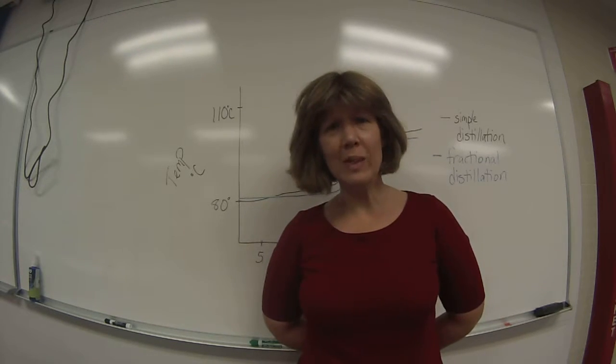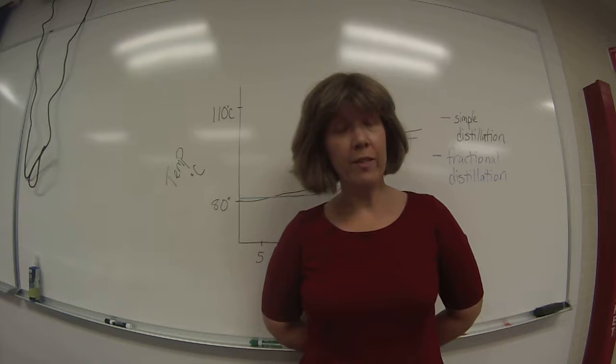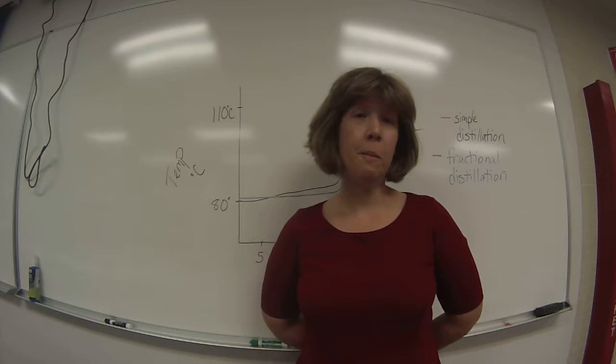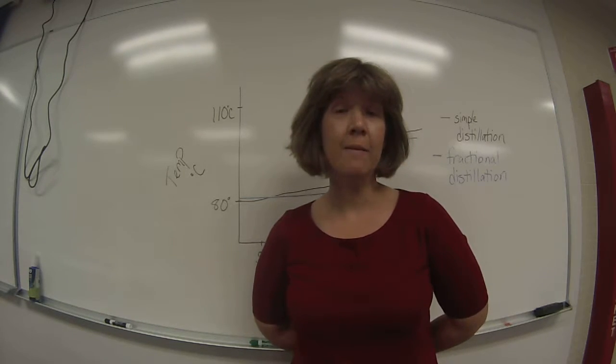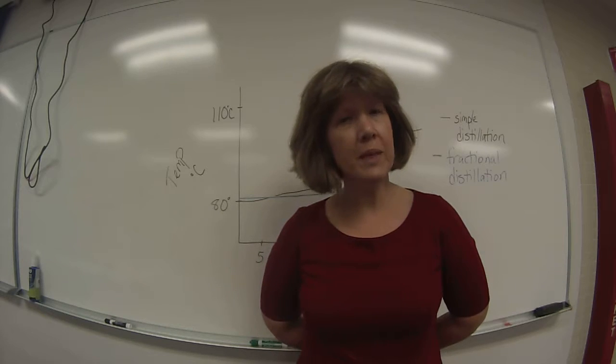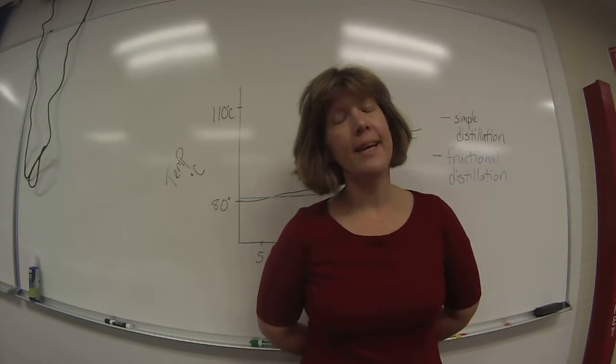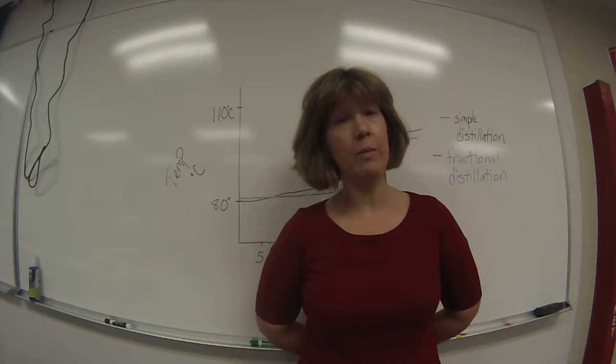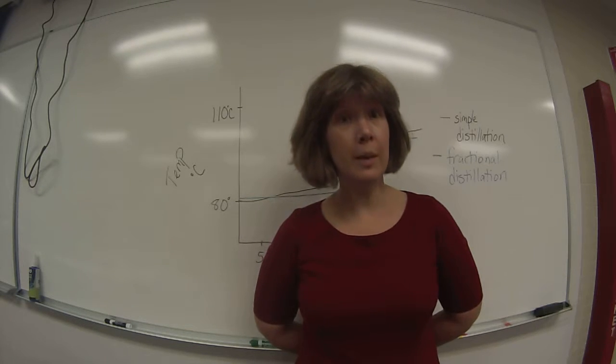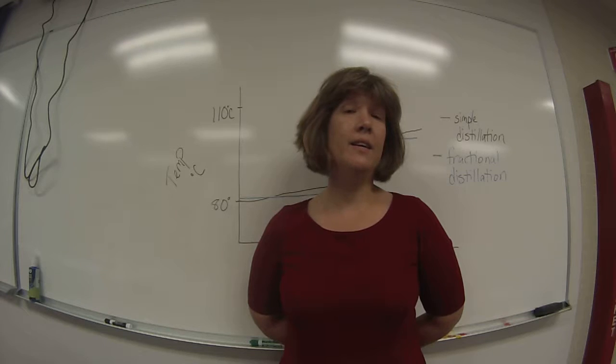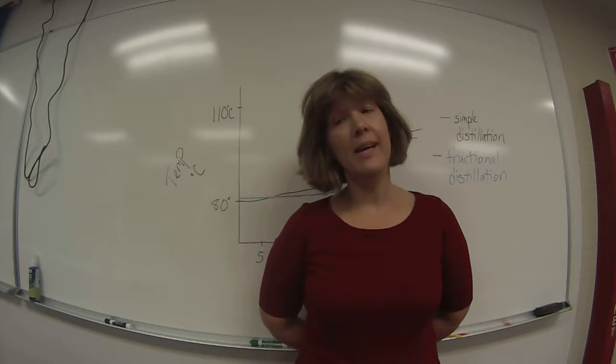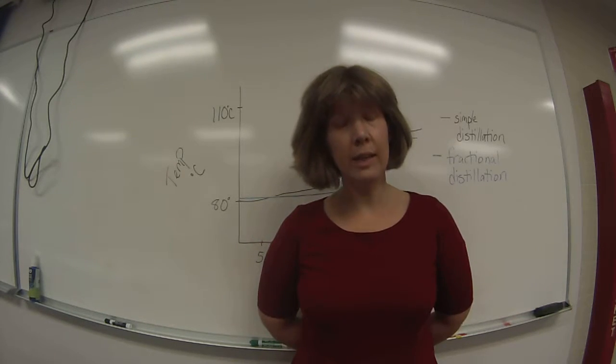So the experiment goes like this. You'll have 25 milliliters of toluene and 25 milliliters of cyclohexane, and combine them in a round-bottom flask. Then, you'll set up the distillation apparatus, and you'll heat the round-bottom flask, and measure the temperature of the vapor that comes off, and then collect the distillate as it comes out of the distillation apparatus.